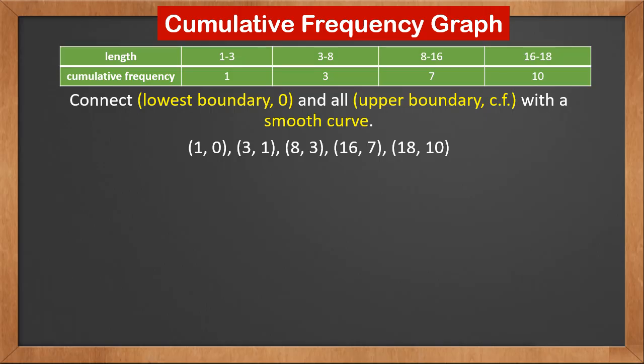Now let's look at the first class. The upper boundary is 3, and the cumulative frequency is 1. So the second point is (3, 1). The upper boundary of the second class is 8, and the cumulative frequency is 3. So the third point is (8, 3).